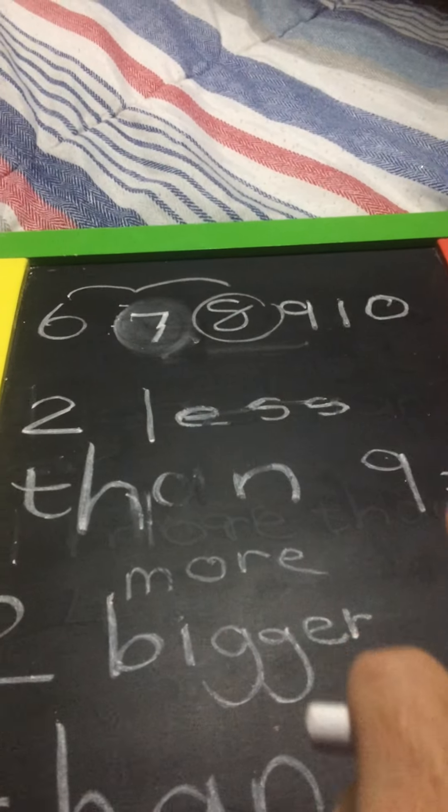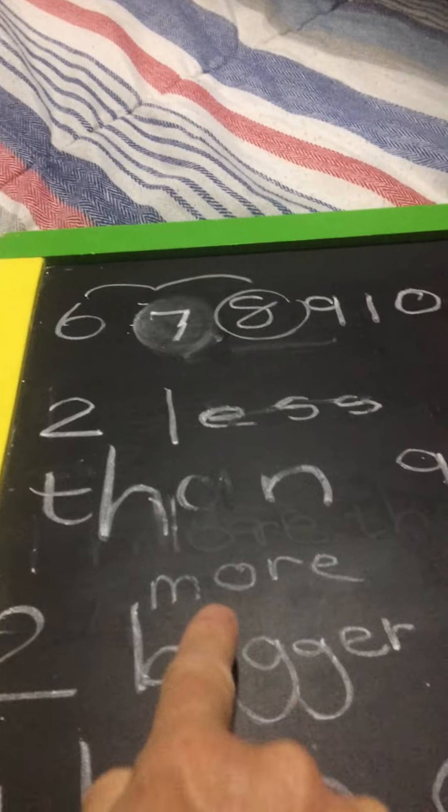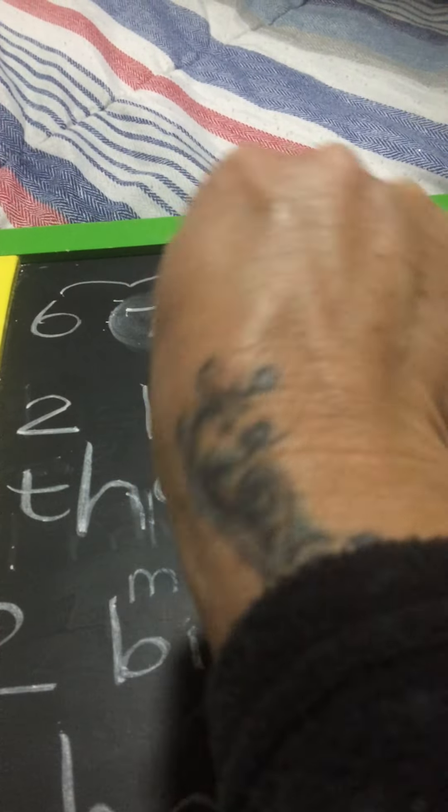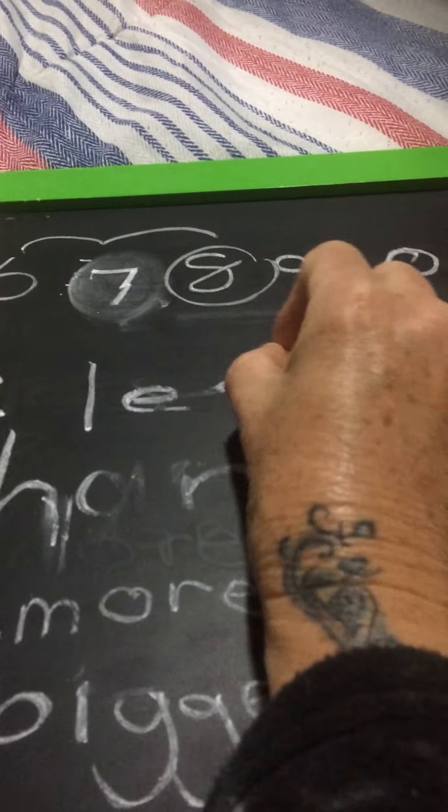So we know that less than is the number before, and more than is the number after. Less than also means smaller.